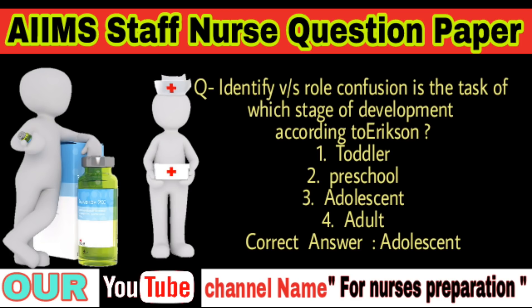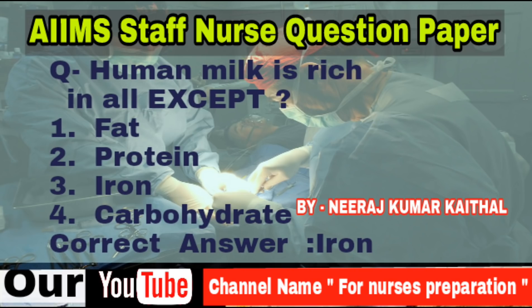Question: Identity versus role confusion is the task of which stage of development according to Erikson? Options: Toddler, preschool, adolescent, adult. Answer is adolescent. Question: Human milk is rich in all EXCEPT — fat, protein, iron, carbohydrate. Correct answer is iron.